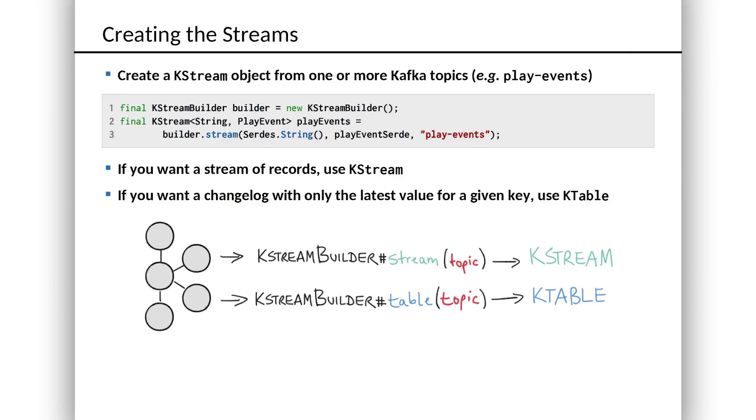With a bit of configuration set up and our type system squared away, it's time to actually create a KStream. KStream is going to be one of the key classes we work with when using the Kafka Streams API. KStream is an abstraction over a stream — an unbounded sequence of structured data, sometimes called events or facts. To create a KStream, we use a helper class called KStreamBuilder, which has a method called stream that lets us look at a Kafka topic. In this case, that Kafka topic is called play events. We call the stream method on the builder, and that gives us an instance of KStream.